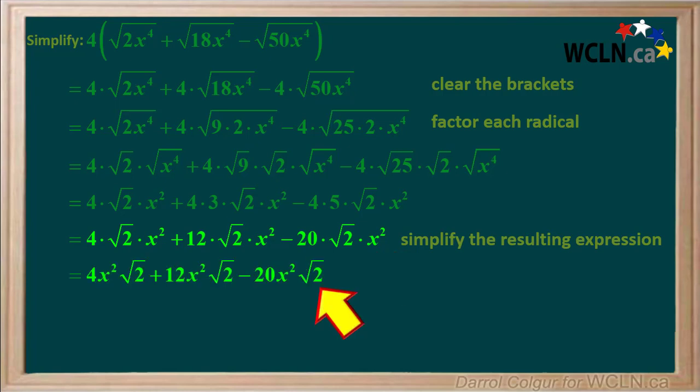We'll rearrange the entries in each term and simplify it a bit. These are all like terms because they all contain x squared root 2. And we can see that these like terms are all written next to each other.